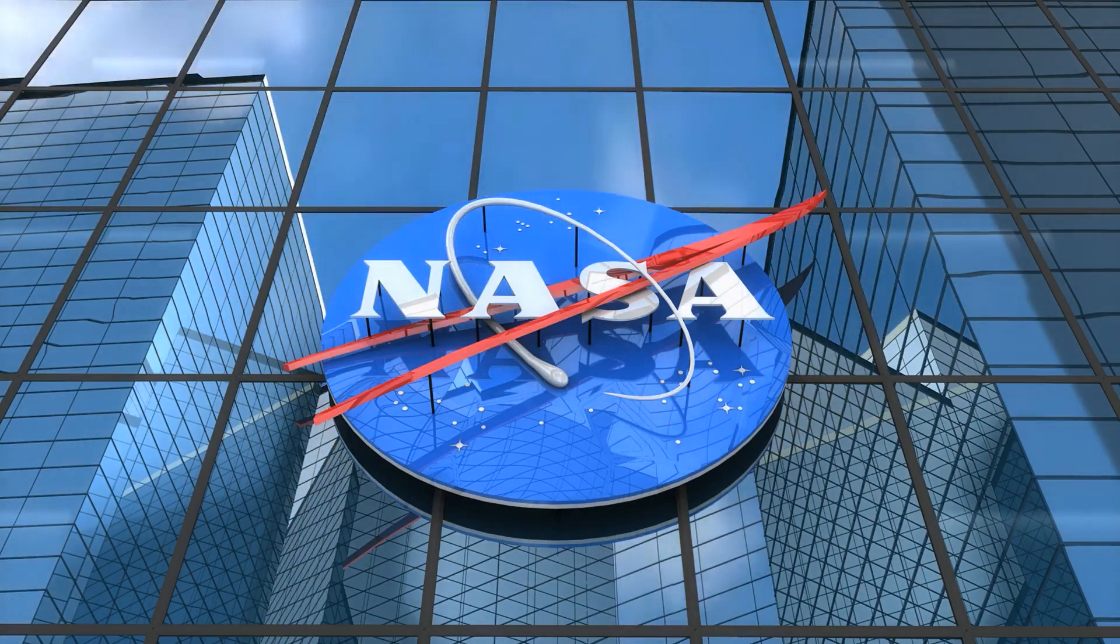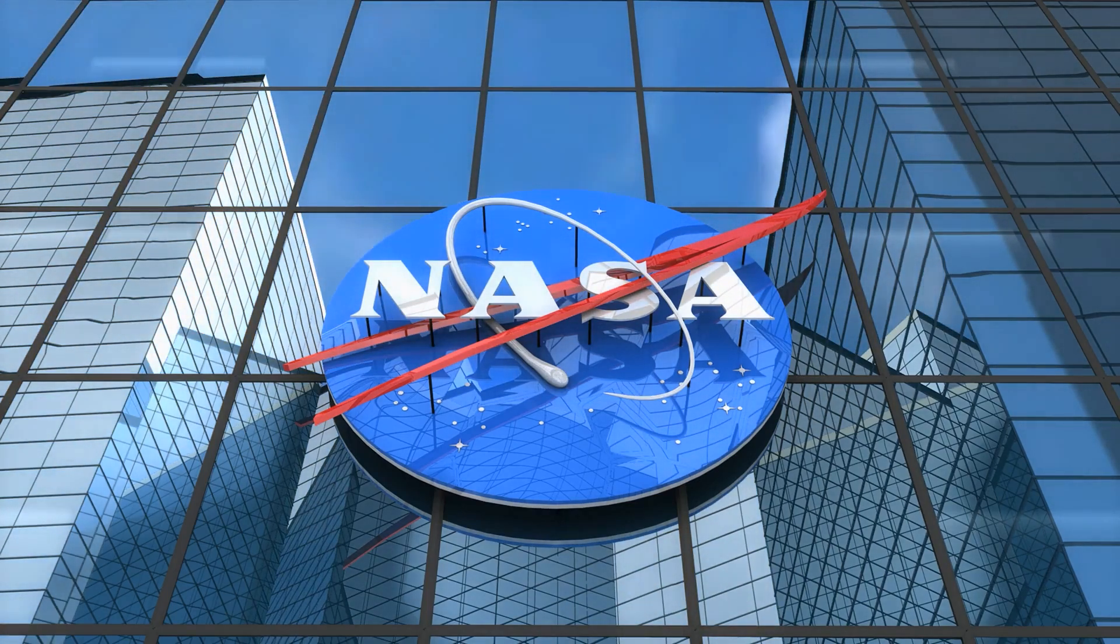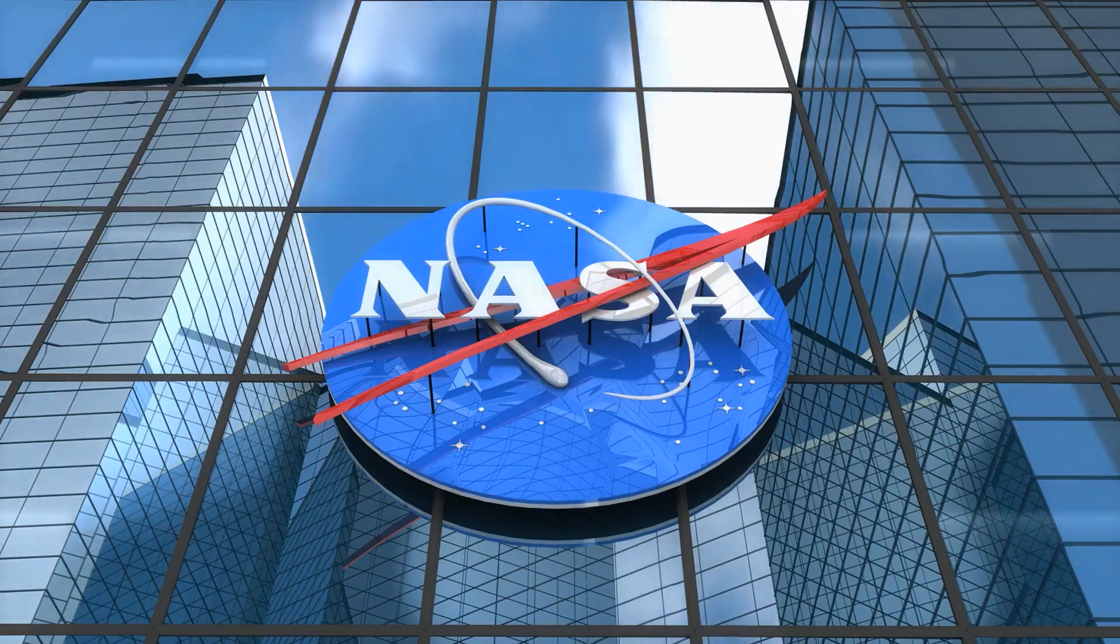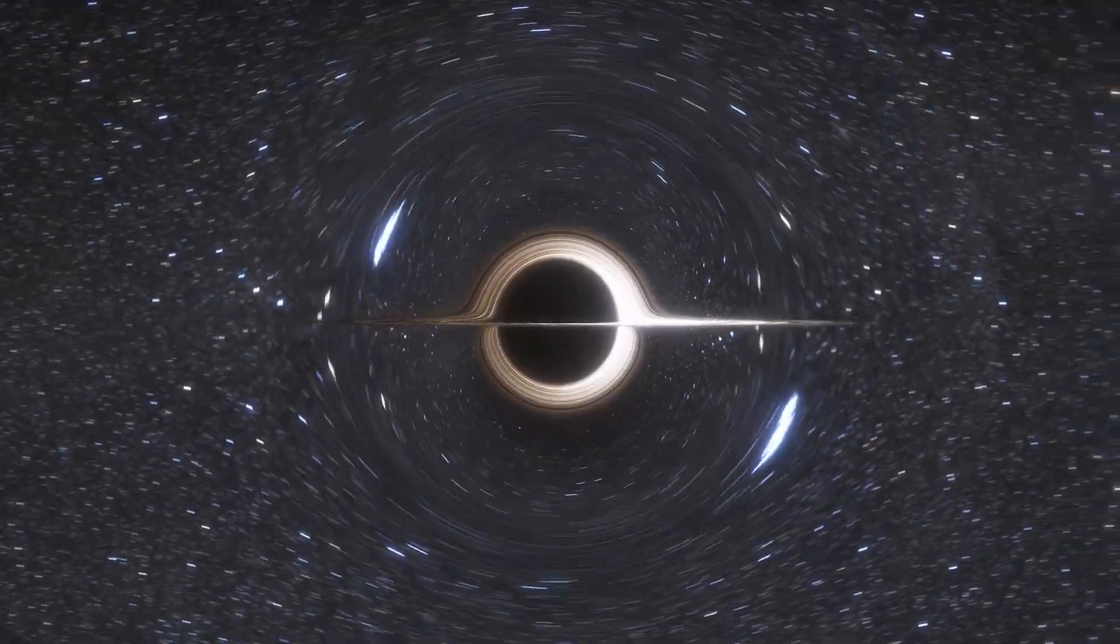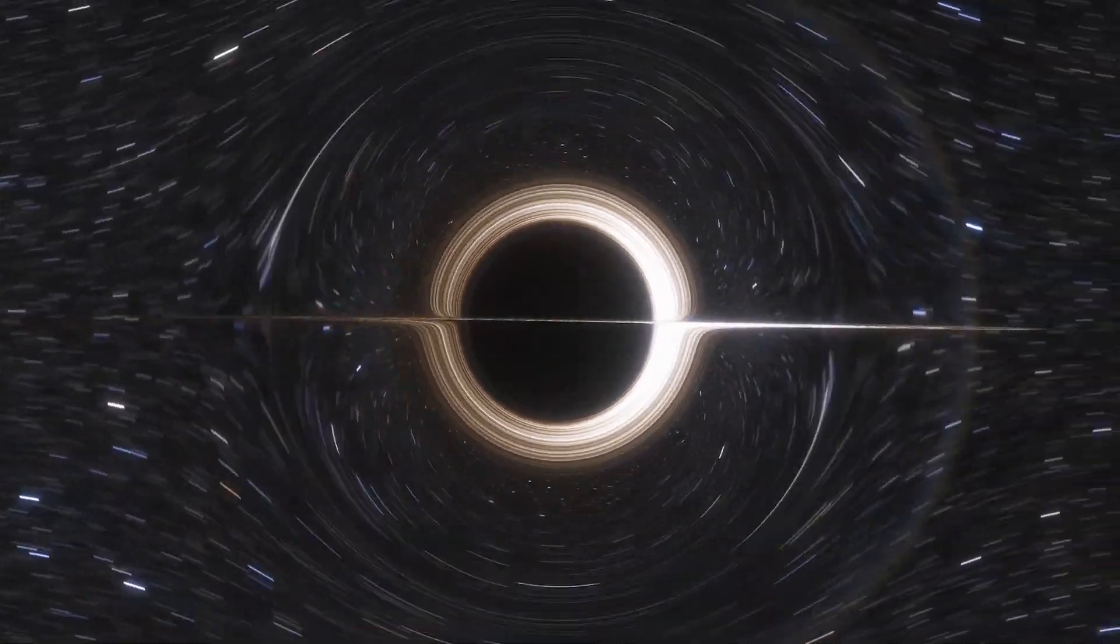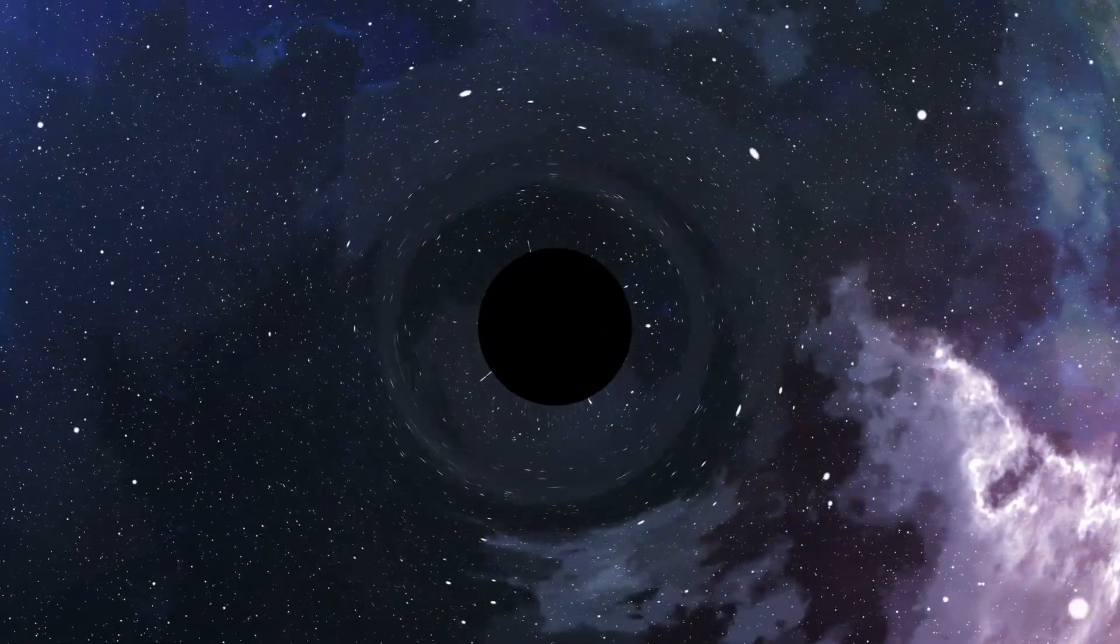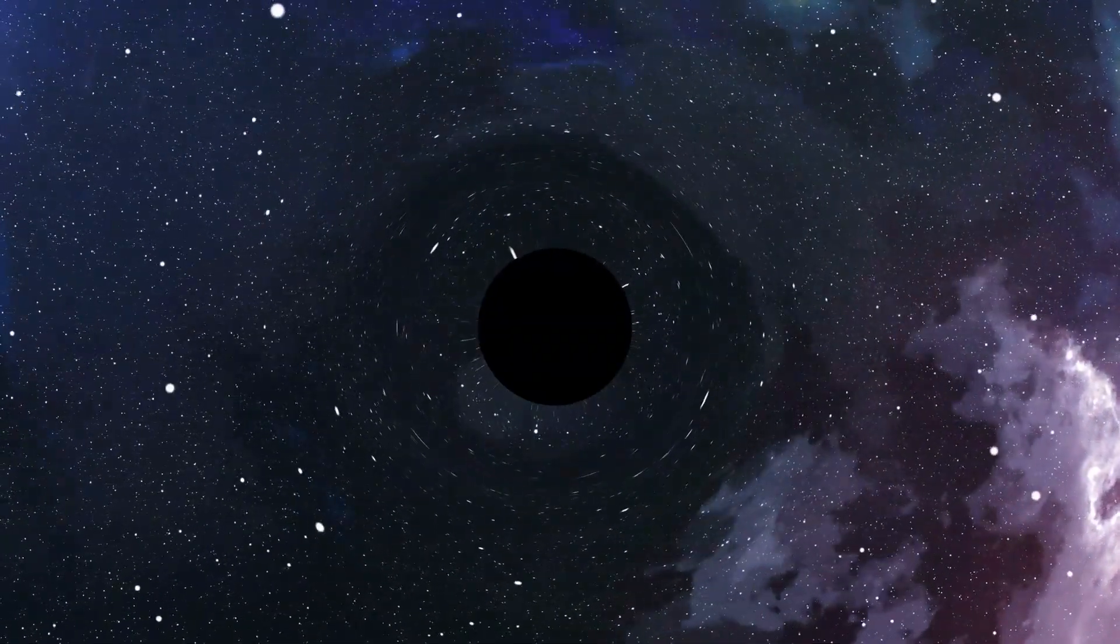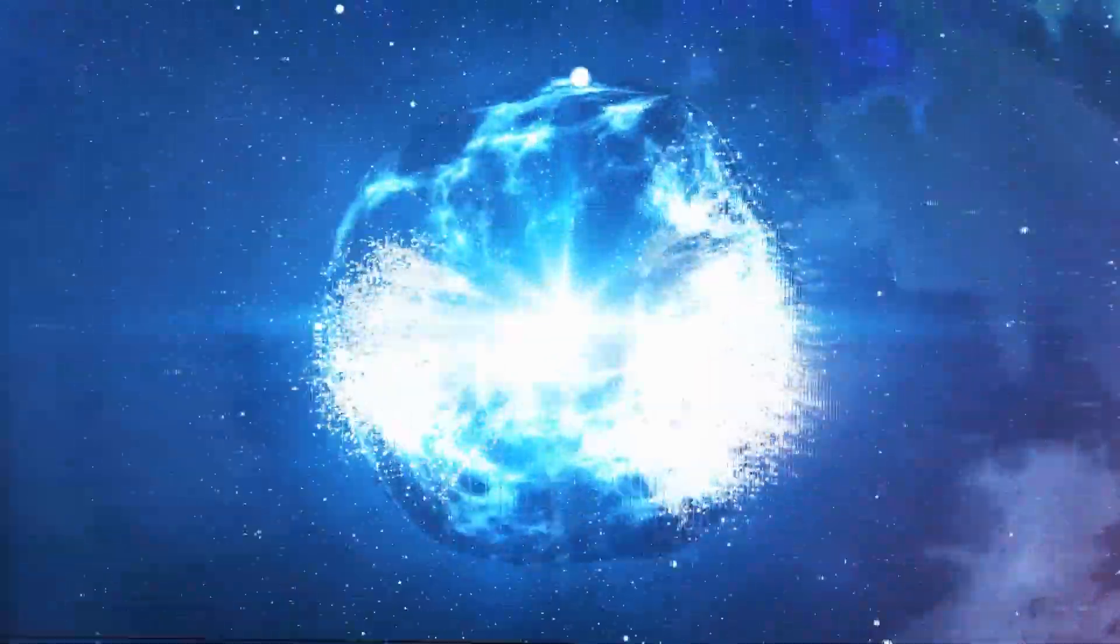According to NASA, black holes are described as a location in space where gravity is so strong that even light cannot escape. Given that matter has been compressed into a small space, gravity is extremely powerful. And because light cannot escape the gravity of a black hole, it seems to be absolutely black, hence the name.